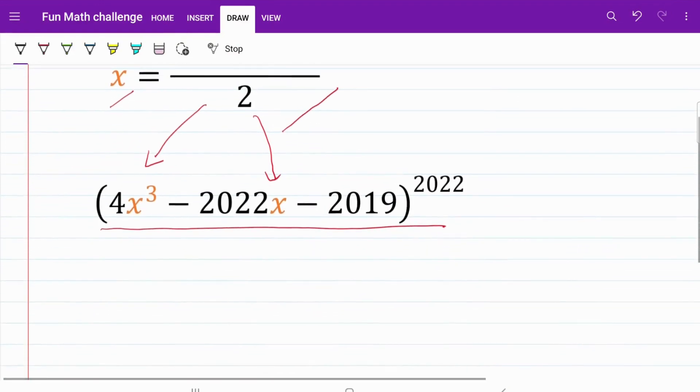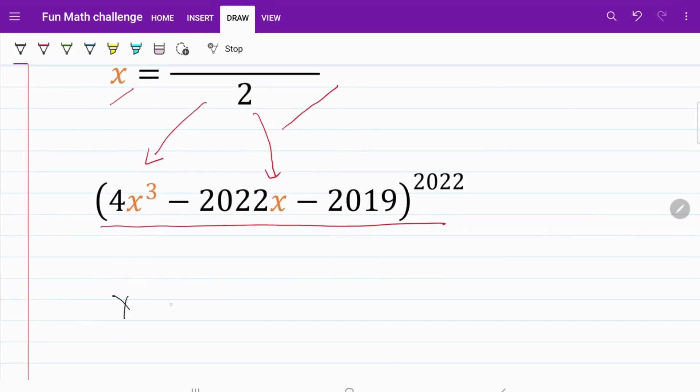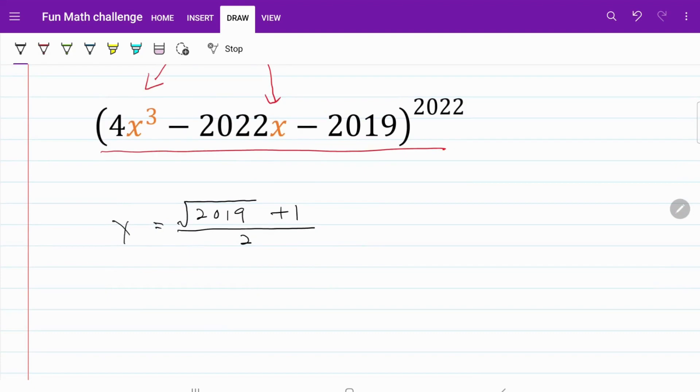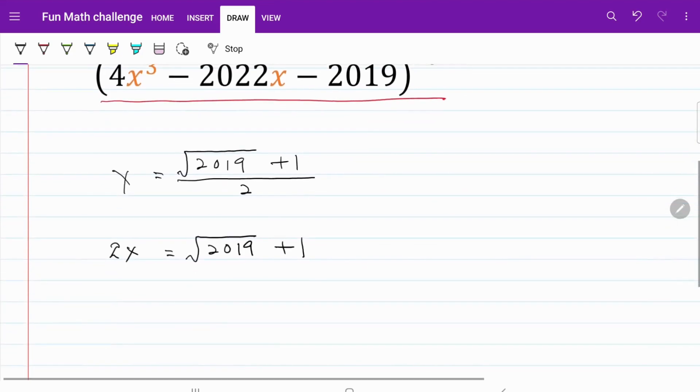We are given x to be equal to square root of 2019 plus 1 divided by 2. From here, we can do some rearranging of this equation. I have 2x to be equal to the square root of 2019 plus 1, and 2x minus 1 is equal to the square root of 2019.